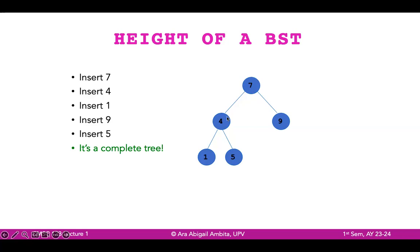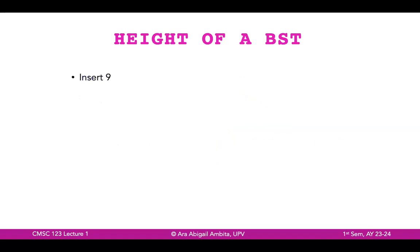If we do searching, deletion, or insertion, at most it would take O(height of the tree), which in this case is two. You count the number of edges from the root to the leaf. Why is it O(log n)? For example, if we delete 5, we traverse from the root to four and then to five — so it's O(log n) or O(height of the tree).